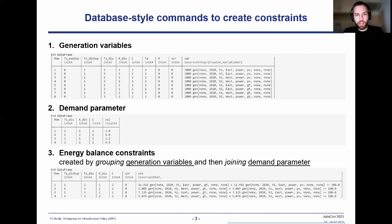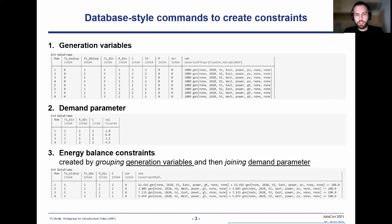The energy balance can now be created by aggregating the generation variables by technology and then performing a join command on the resulting DataFrame that adds the demand. We then have all information in one DataFrame to create the constraint, which results in the DataFrame shown at the very bottom.